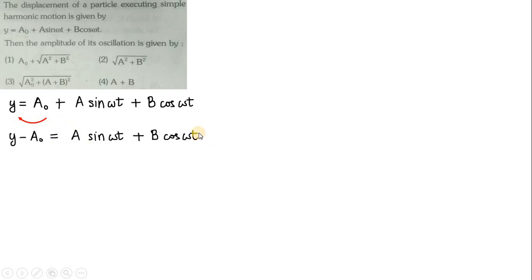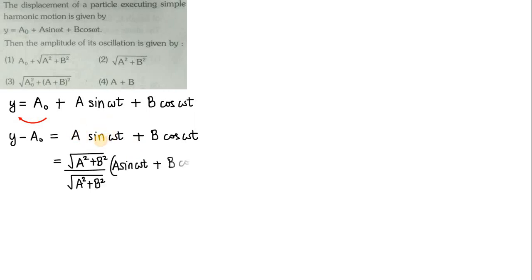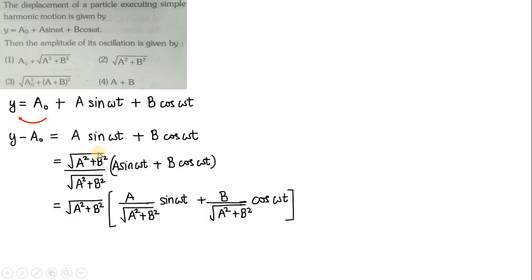The right-hand side, a·sin(ωt) + b·cos(ωt), is called the linear combination of trigonometric functions. The next step is to multiply and divide by √(a² + b²). Multiplying and dividing by the same quantity does not change anything — the function remains the same. We then keep √(a² + b²) outside the bracket, and the denominator √(a² + b²) goes inside, appearing below the constants a and b respectively.